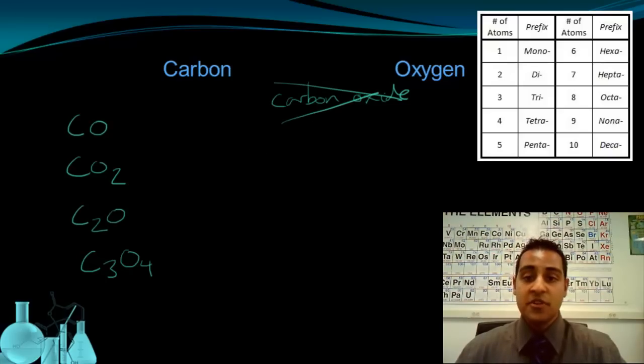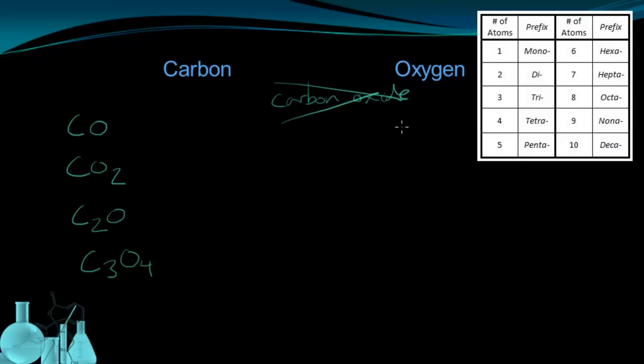Instead, we actually use prefixes. So here's a table of prefixes that are used. If there's one atom, we use the prefix mono. If there's two, we use di. Three is tri, and so on and so forth.